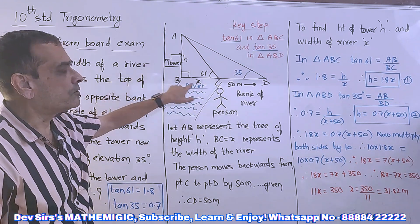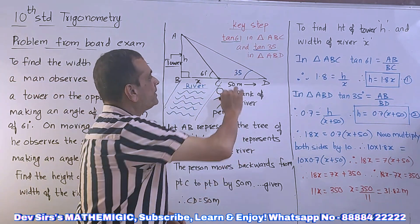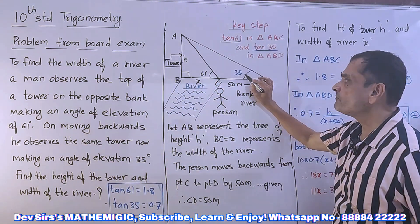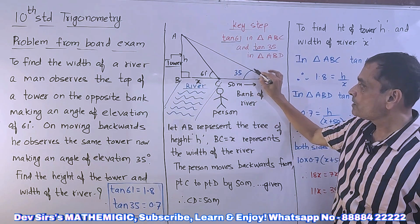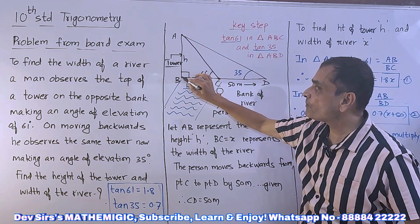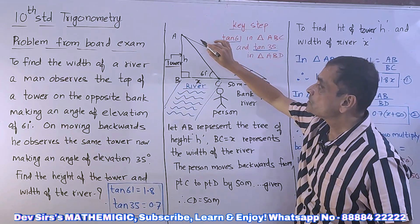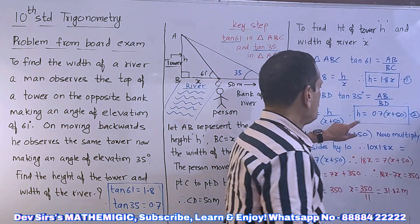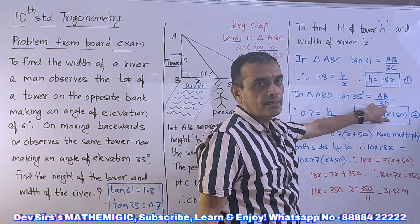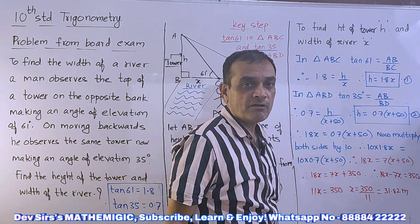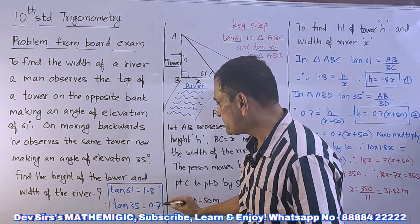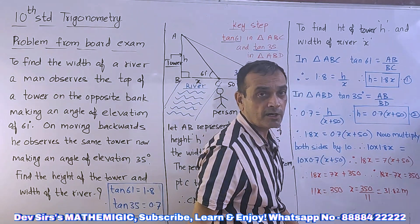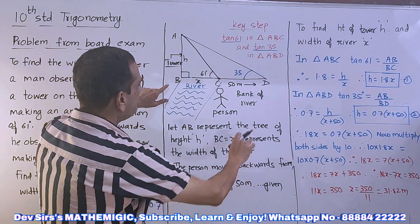Now let us go to triangle ABD. From the key step, we use tan 35 in triangle ABD. Tan 35 equals opposite side upon adjacent side, so AB upon BD. The value of tan 35 is given as 0.7, so 0.7 equals h upon BD. Now BD is important — BD equals x plus 50.